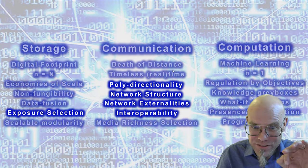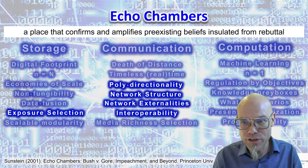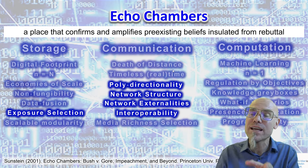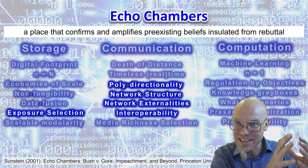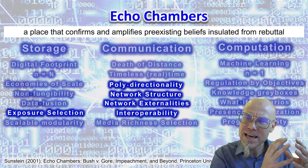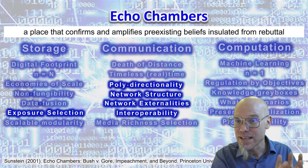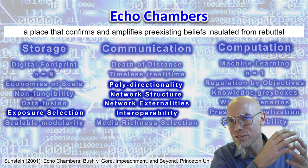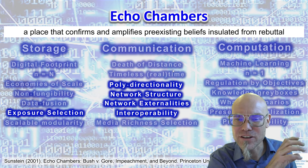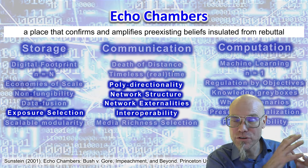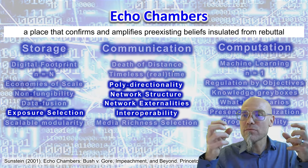Adding the network structure and exposure selection on top, you get what is known as an echo chamber. Filter bubbles and echo chambers are quite different, though they often complement each other. An echo chamber is quite hermetic: once you're locked away in the filter bubble, together with others you create an echo chamber — a place that confirms and amplifies pre-existing beliefs, insulated from rebuttal. You want confirmation bias; it makes you feel comfortable. So you stay in your echo chamber, which could lead to even more polarization — though whether it does is still an open question.